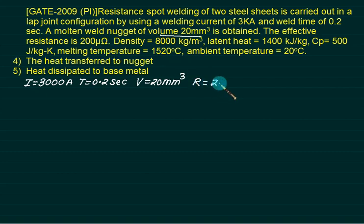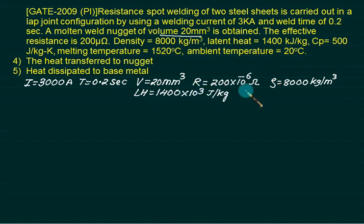The effective resistance is 200 micro ohm. Effective means R4 is same as R, 200 into 10 to the power minus 6 ohm. Density, rho is 8000. Latent heat LH 1400 into 10 to the power 3 because it is kilo. And the specific heat is 500. Melting point is degree Celsius, so ambient must be also degree Celsius. What do you want to calculate? The heat transfer to nugget and heat dissipated to base metal.